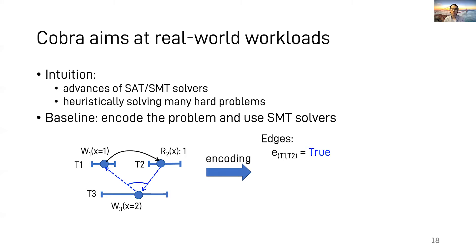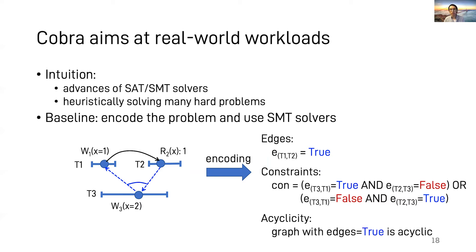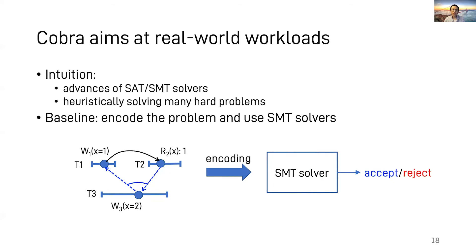Second, we encode the constraint into a binary choice that either one edge is true and the other is false or vice versa. Finally, we assert that the graph is acyclic. We then send these clauses to an SMT solver.